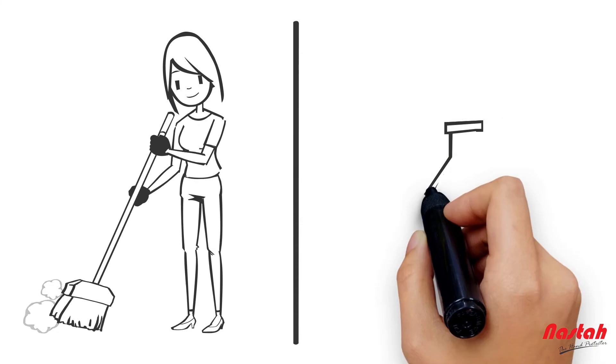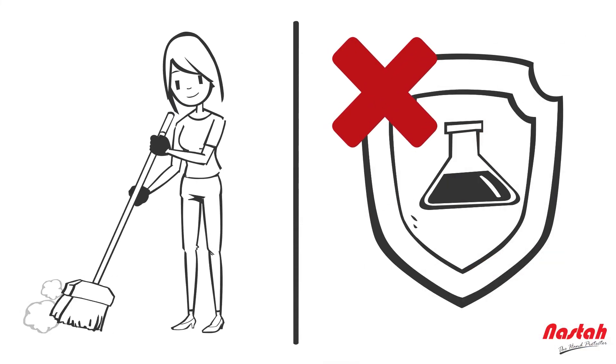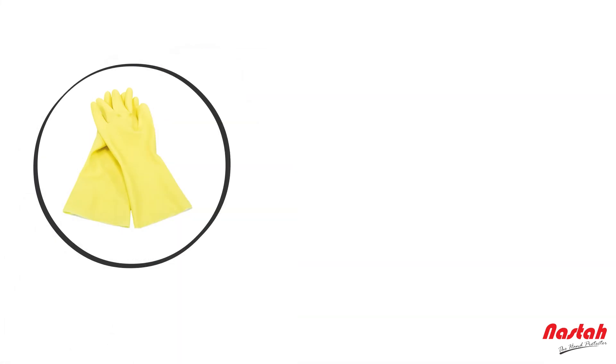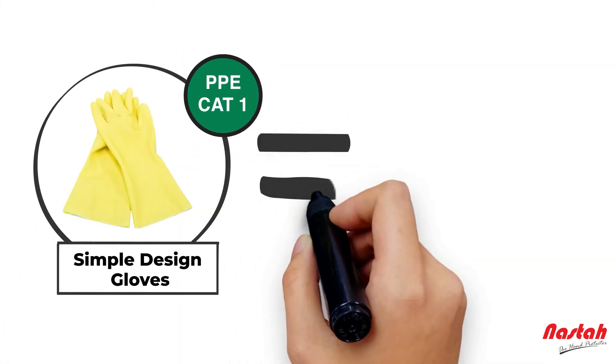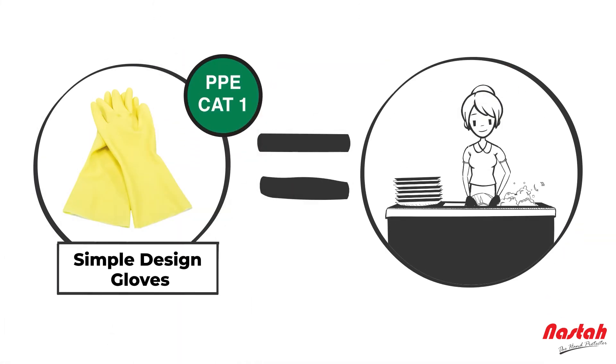For example, if the gloves are targeted for household usage, high chemical-resistant performance is not always expected. Hence, going for simple design gloves in Category 1 for protection against minimal risk will serve the purpose as household gloves.